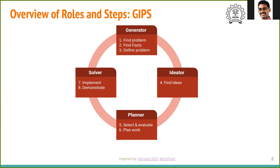In the following slides we are going to elaborate on these various steps: finding the problems, finding the facts, defining the problems, finding the ideas, selecting and implementing. Along with these steps, we'll also identify the role of each team member — what the Generator does, what personality traits a Generator has, and what the typical skills of these various team members are.